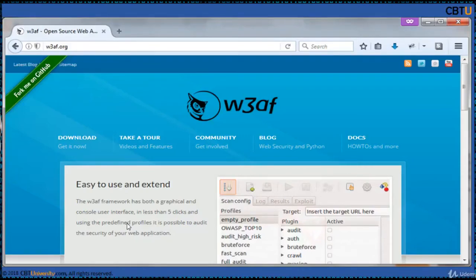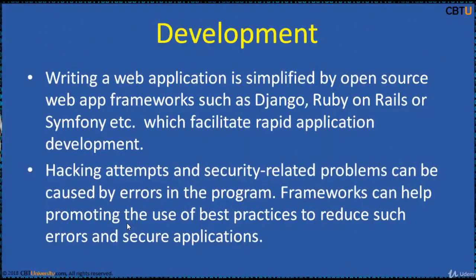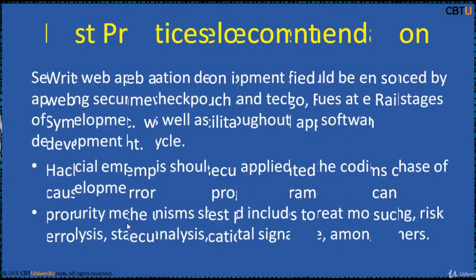The W3AF framework can be called the Metasploit for the web. Writing a web application is simplified by open source web application frameworks such as Django, Ruby on Rails, and Symfony. These facilitate rapid application development. Hacking attempts and security-related problems can be caused by errors in the program. Frameworks can help promote the use of best practices to reduce such errors and secure applications.